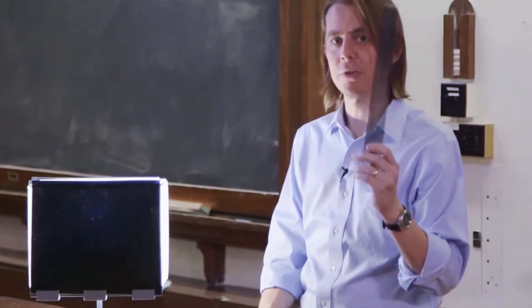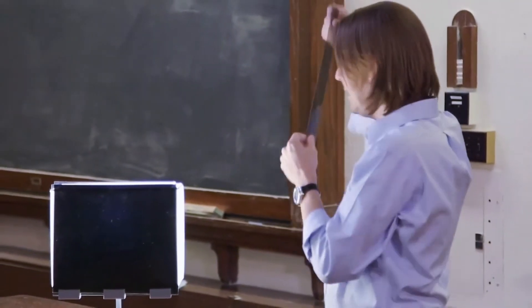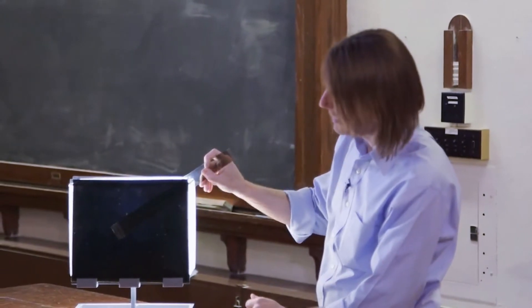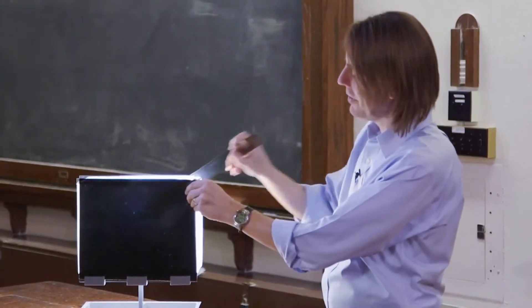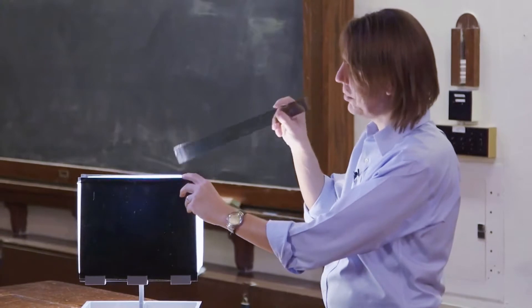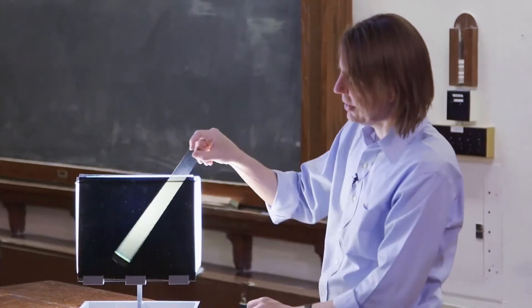And this is just a polarizer. I can look at it, I can find its transmission axis and everything. And if I put it in front, nothing happens. And if I put it in behind them, nothing happens. But if I put it like that, suddenly the light gets through.